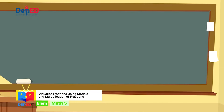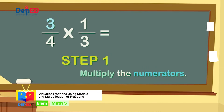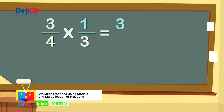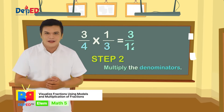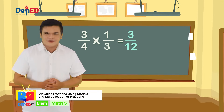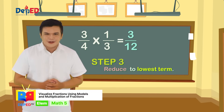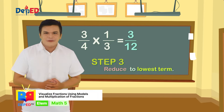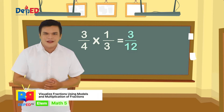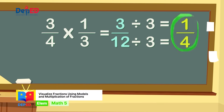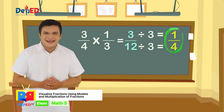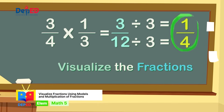Step three: Solve. We will multiply three-fourths by one-third. Step one: multiply the numerators — three times one is equal to three. Step two: multiply the denominators — three times four is equal to twelve, so our answer is three-twelfths. Step three: reduce to lowest term. Find the greatest common factor of both three and twelve — in this case, three. Three divided by three equals one, and twelve divided by three equals four. Therefore, our answer is one-fourth.